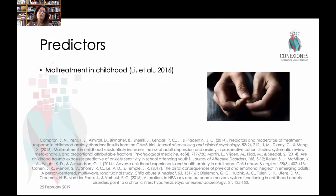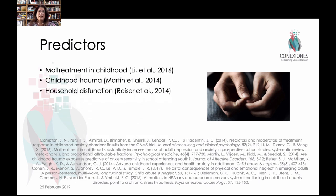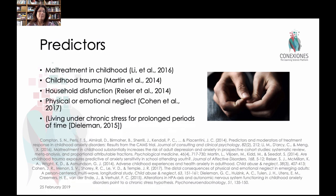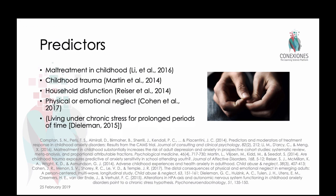Some predictors of people who will develop anxiety disorder include things like maltreatment in childhood, trauma, household dysfunction, and physical and emotional neglect. Basically, all of these things that involve living under chronic stress for prolonged periods of time are strong predictors that a person may succumb to an anxiety disorder.